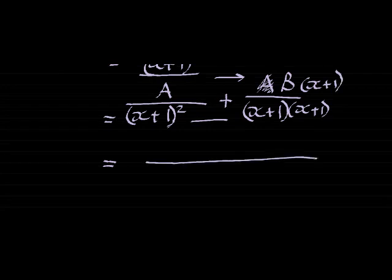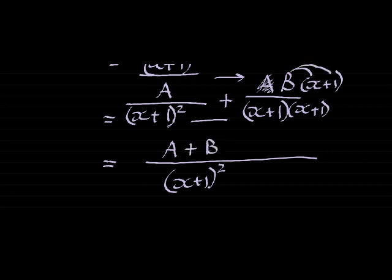So now I can add them up. (x plus 1) squared is the common denominator. With this first numerator, I do not need to multiply with anything, but the second one needs to be multiplied. So I have plus bx plus b.